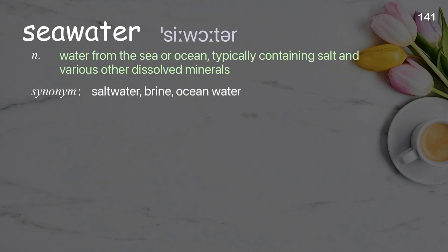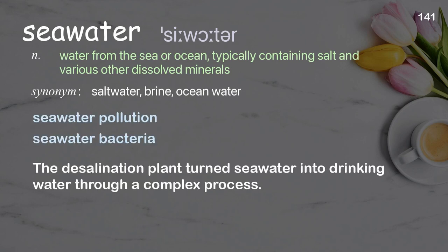Seawater: water from the sea or ocean, typically containing salt and various other dissolved minerals. Examples: seawater pollution, seawater bacteria. The desalination plant turns seawater into drinking water through a complex process.